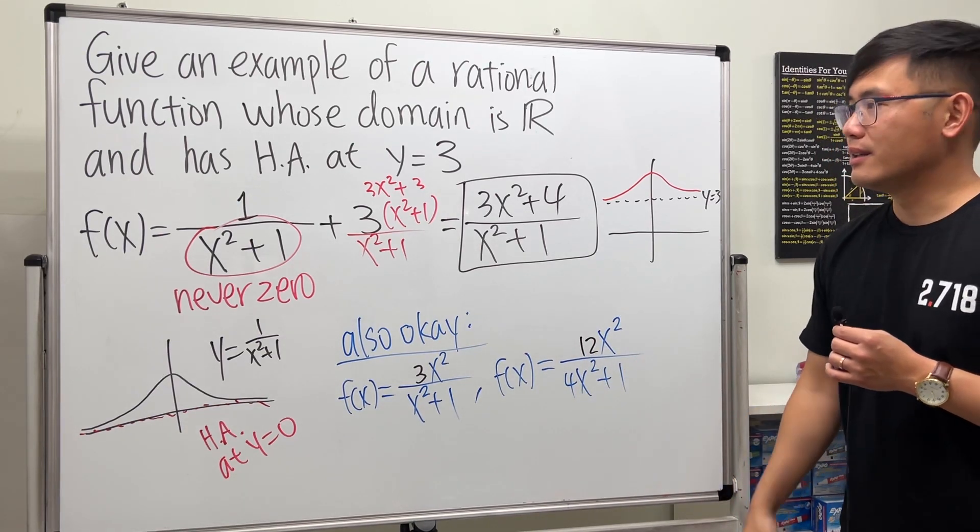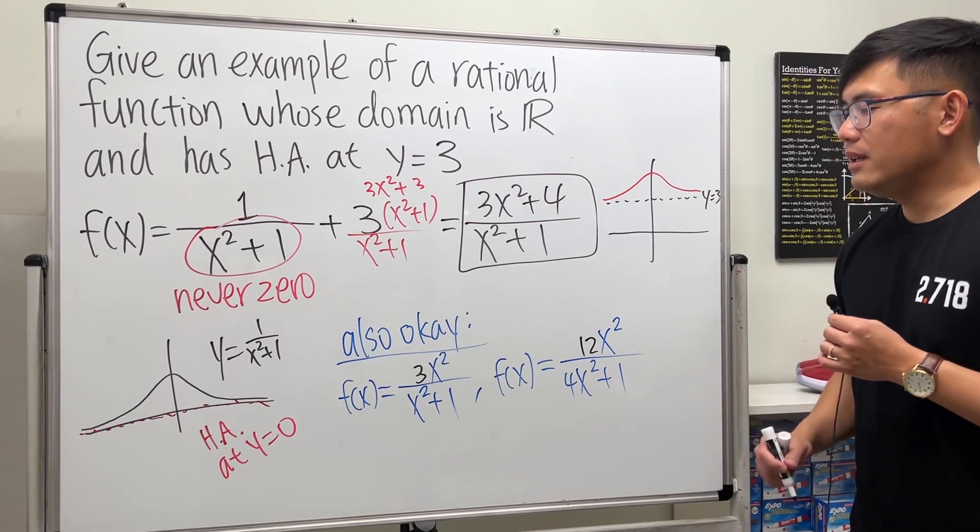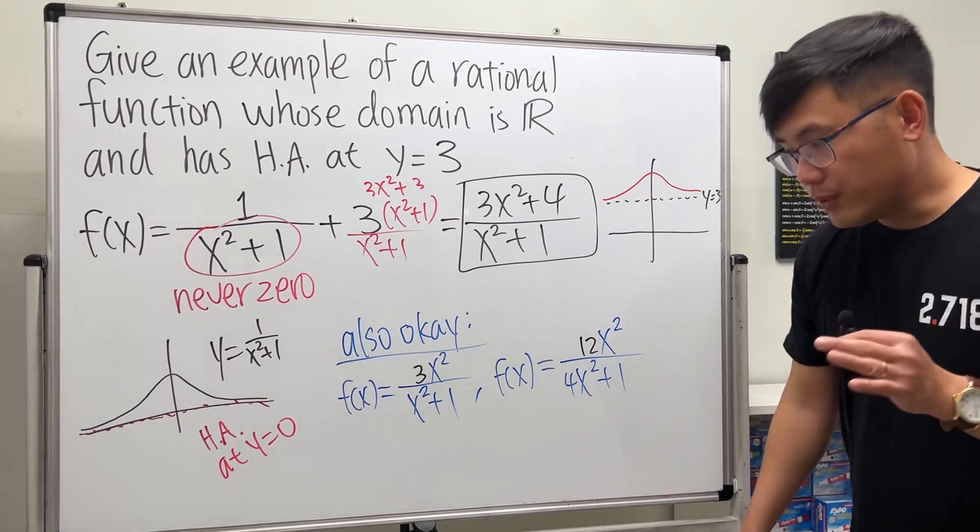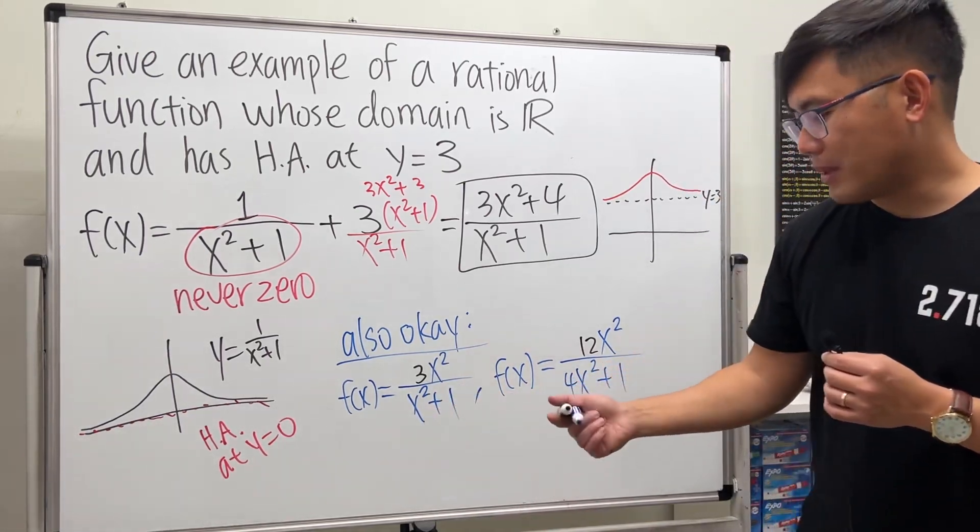Right now I have 4, so on the top 3 times 4 is 12. I just put 12. This will also work. Go ahead and try it—domain's the set of all real numbers, and the horizontal asymptote is at y equals 3.